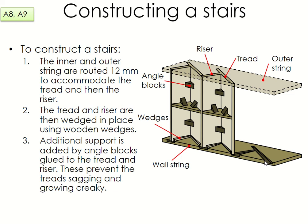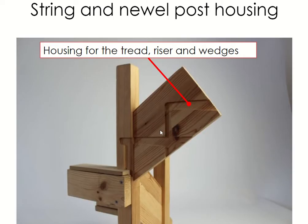The tread and the riser are then wedged in place using wooden wedges — just angled pieces of wood that are put in. Additional support is added by angle blocks glued to the tread and the riser; these prevent the treads sagging and growing creaky, so the steps don't squeak as people walk up and down. So this is the side board or string; the riser fits in here, the tread fits in here, and that will be on both sides, then we wedge them together.